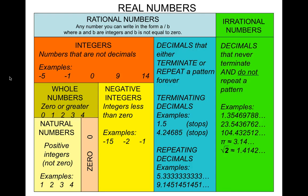There are a couple different types of integers: whole numbers and negative integers. Whole numbers are numbers from 0 or greater, but they do not include decimals or fractions. For example, 0, 1, 2, 3, 4, and so on are whole numbers.